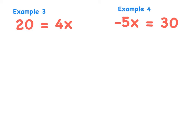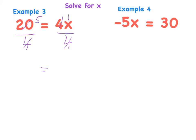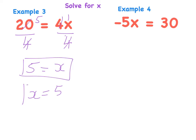The next example is 20 is equal to 4x. What's unusual here is that x is on the right side, but nothing really changes because I can read from left to right or right to left. I'm looking at 4x, which means 4 multiplied by x. The question asks me to solve for x, so I need to get rid of this 4 by dividing by 4. What I do to one side I must do to the other. 4 goes into 4x once, and 4 goes into 20 five times. So x is equal to 5 — you can read it either way and they mean the same thing.